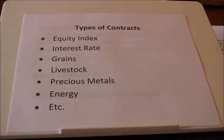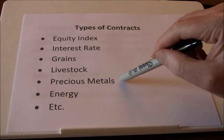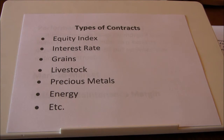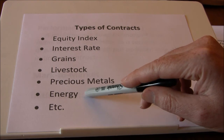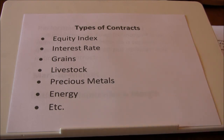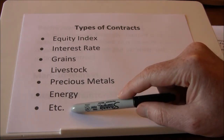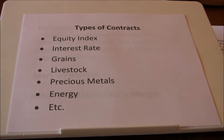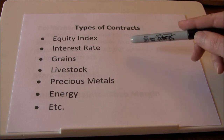Livestock like cattle and pork bellies. Precious metals are actually a pretty popular futures contract right now — there's been lots of interest in gold over the last few years, so gold futures are heavily traded. Energy has also been very popular over the last several years. There are oil futures, RBOB gasoline futures where you can buy or sell futures on unleaded gasoline, and many other types of futures contracts — coffee futures, weather futures, futures on real estate indices. All kinds of different contracts have been created essentially tied to an underlying asset.